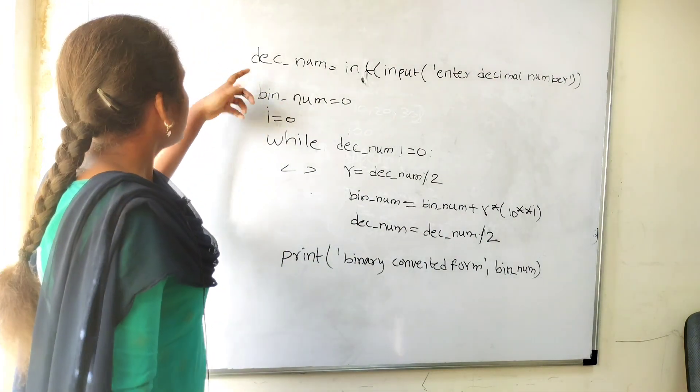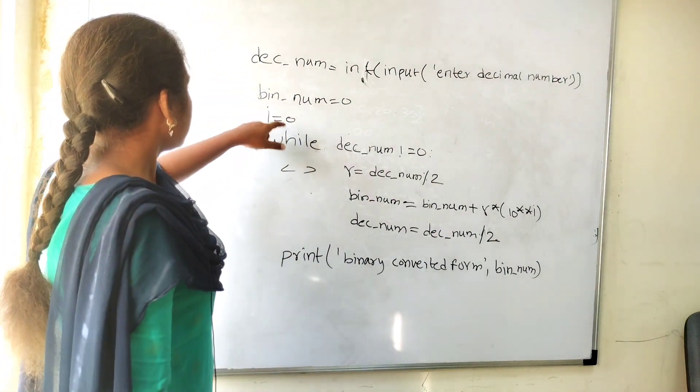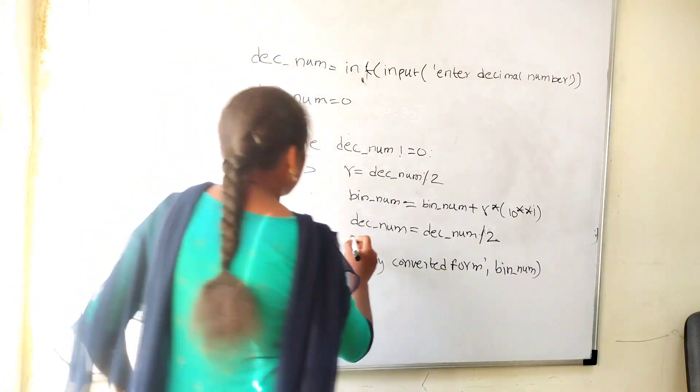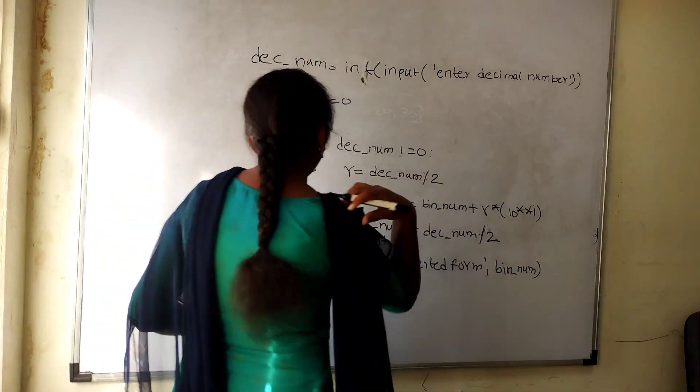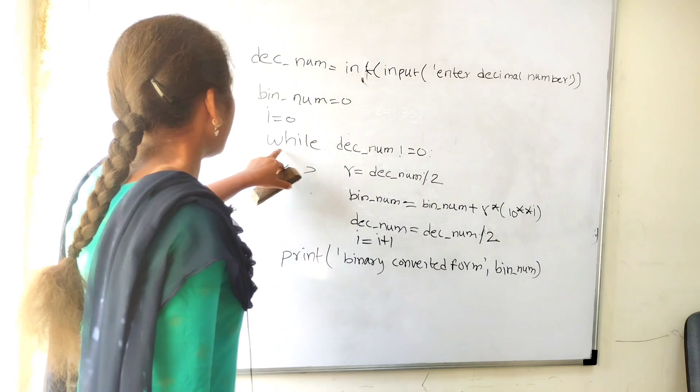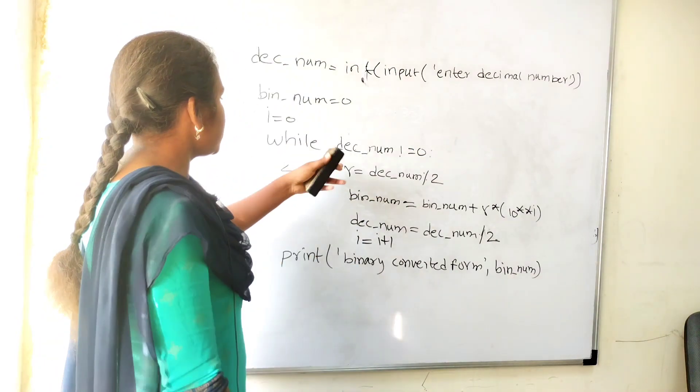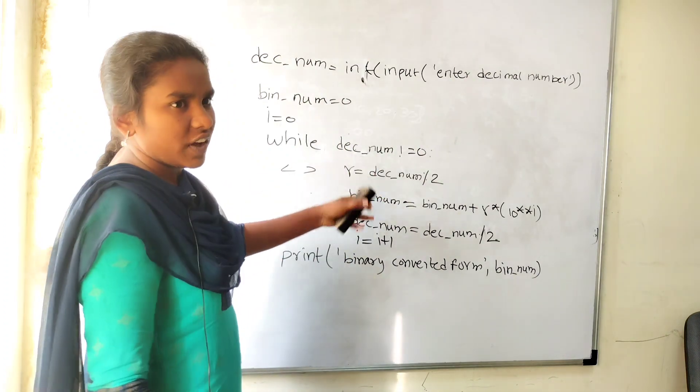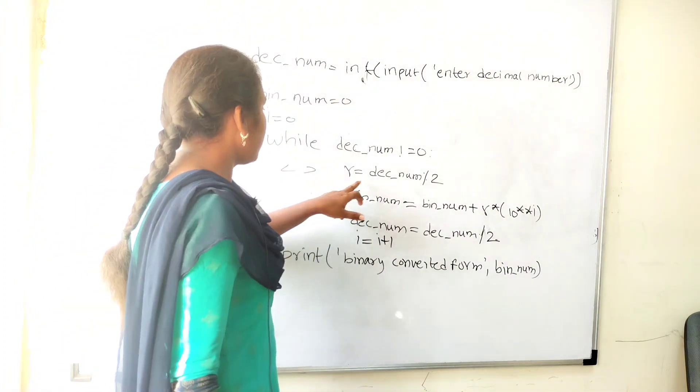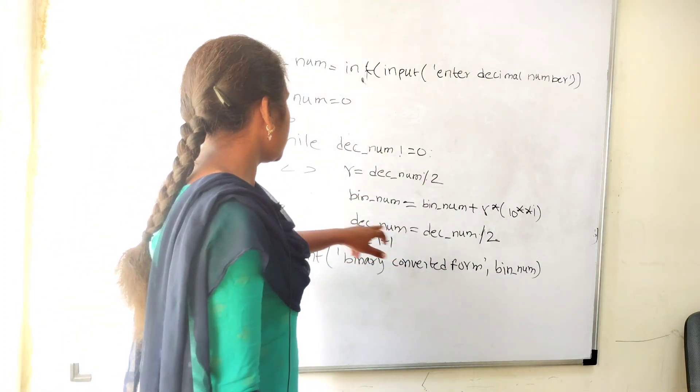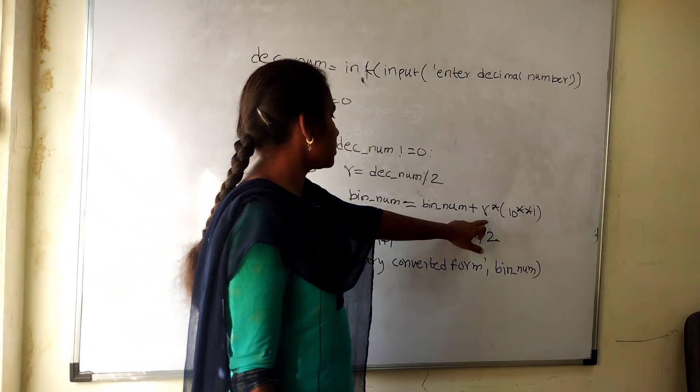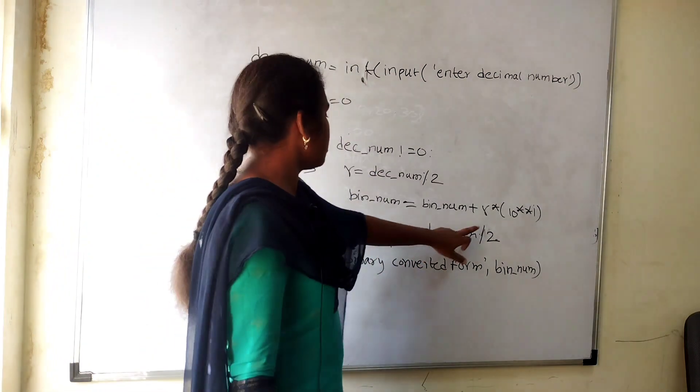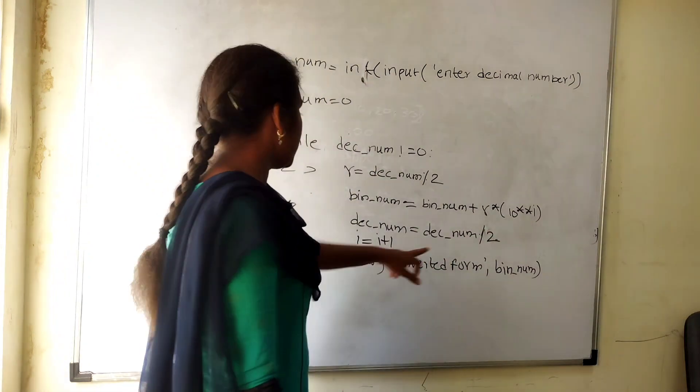First I have taken the decimal number, then I will set the binary number equal to zero, i equal to zero. While decimal number not equal to zero, it will print the value. While this condition is true, until the condition is false, it will continue the loop. R equal to remainder equal to decimal number percentage 2. Binary number equal to binary number plus remainder into 10 to the power of i. Decimal number equal to decimal number by 2.